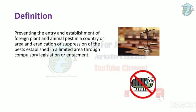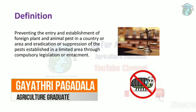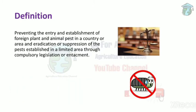Legal methods means preventing the entry and establishment of foreign plant and animal pests in a country or area, and eradication or suppression of pests established in a limited area through compulsory legislation or enactment. This means that if a pest is accidentally introduced in our country, we have strict rules to stop it.